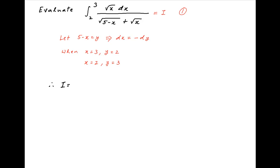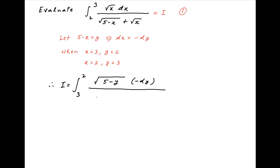Therefore, I can also be written as an integral with y going from 3 to 2, and replacing x with 5 minus y, we get in the numerator square root of (5 minus y). dx is replaced with minus dy, and in the denominator we have square root of y plus square root of (5 minus y).